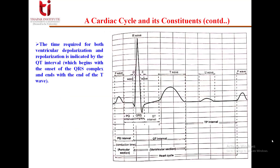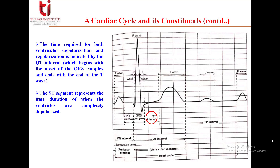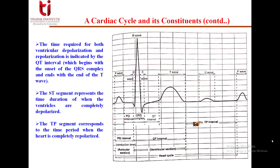The time required for both ventricular depolarization and repolarization is indicated by the QT interval, which begins with the onset of the QRS complex and ends with the end of the T wave. The ST segment represents the time duration when the ventricles are completely depolarized. The TP interval or TP segment corresponds to the time period when the heart is completely repolarized.